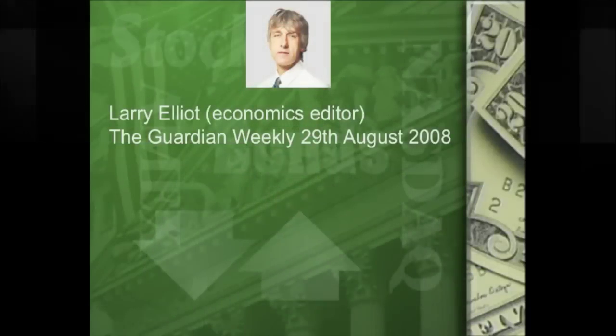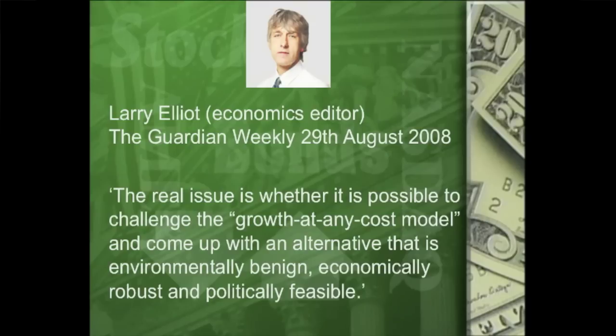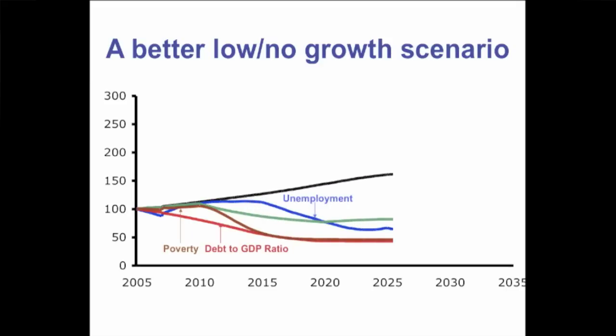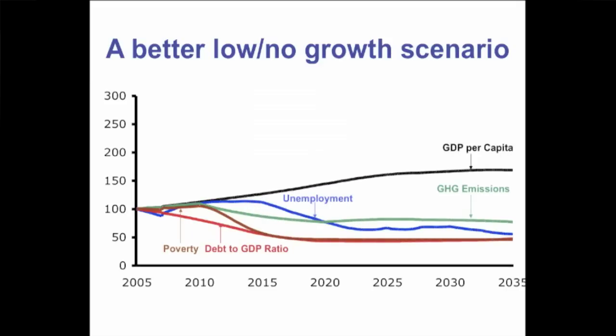The question is, can we do better? Larry Elliott from the Guardian Weekly wrote in 2008 that the real issue is whether it's possible to challenge the growth-at-any-cost model and come up with an alternative that is environmentally benign, economically robust, and politically feasible. I believe it is. In this better low or no-growth scenario, I've introduced measures starting in 2010 running for the next 10 years so that ultimately economic growth is ended and GDP per capita is constant. But unemployment has come way down — lower than we've had for 50 years. The government's debt-to-GDP ratio is healthy. The poverty level has come way down, measured using the UN Human Poverty Index. And most particularly, greenhouse gas emissions have come down well below where they were in 2005.